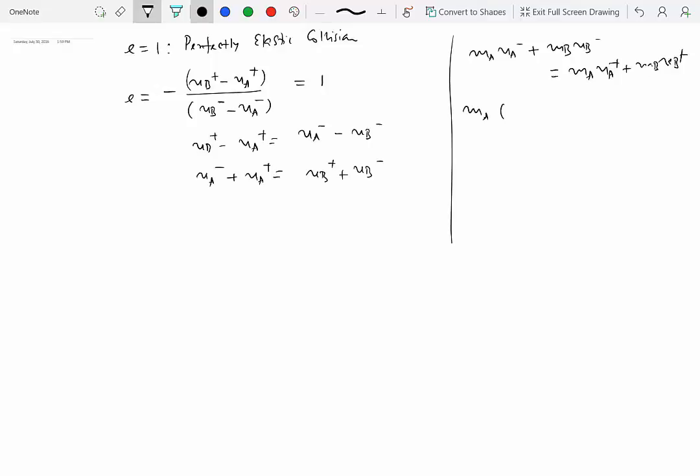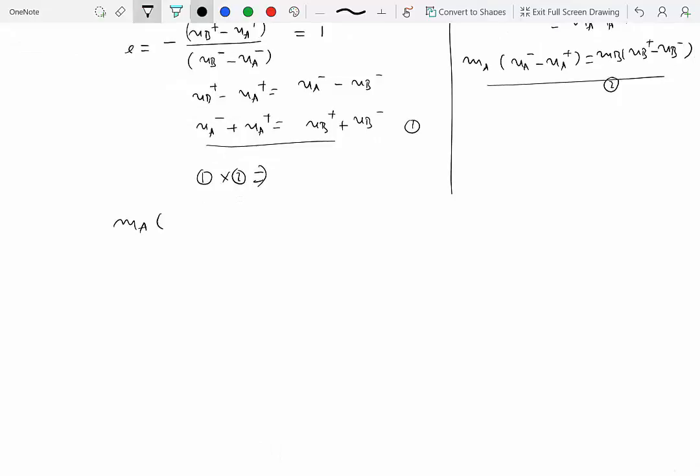Rearranging by bringing all A terms to the same side, we get MA times (VA minus minus VA plus) equals MB times (VB plus minus VB minus). Now we can multiply these two equations. Multiplying equation 1 times equation 2 gives us MA times (VA minus squared minus VA plus squared).